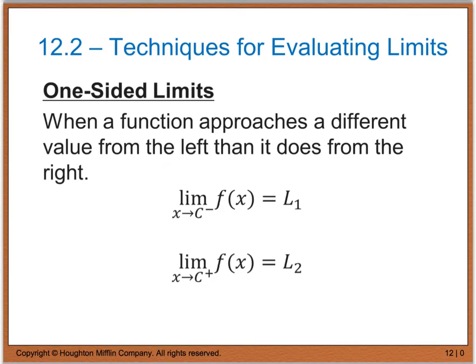Another topic we have to look at when dealing with limits are what we call one-sided limits. A one-sided limit is when a function approaches a different value from the left than it does from the right. The limit as x approaches c with a negative sign means from the left — the limit as x approaches c from the left of f of x equals L sub 1. Likewise, the limit as x approaches c from the right, because of the plus sign, of f of x equals your second limit, L sub 2.